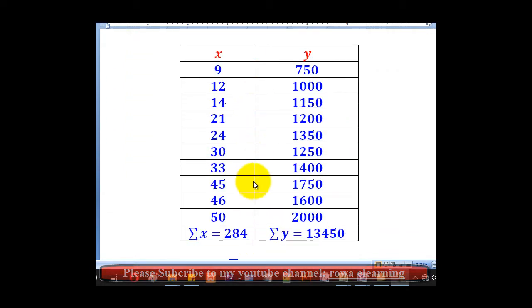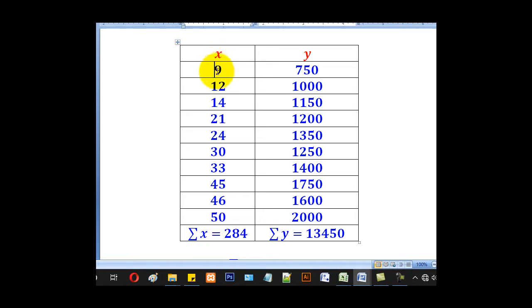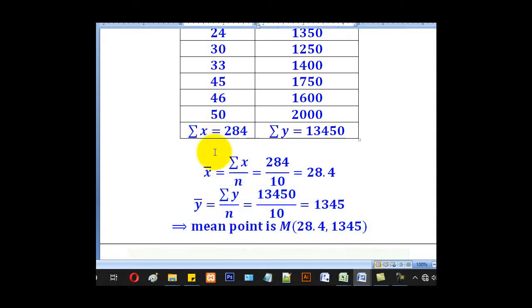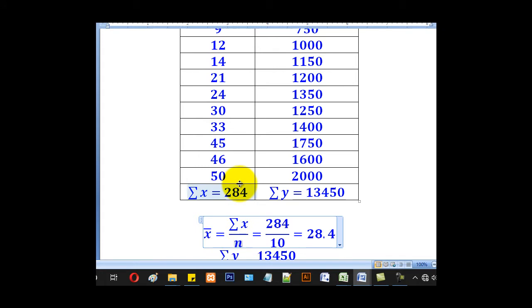So the first step to get the line of best fit is to get the mean point, capital M. That mean point is got by summing up all these x values. When you sum up, you get 284. Similarly, when you sum up the y values, you'll get 13,450. So you have to get the mean value of x, which is given by the formula summation x over n.